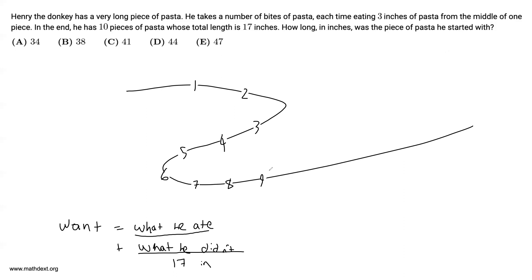And so what does that mean? How much pasta did he eat? Well, every time he took a bite of pasta, he took three inches off. And since he took nine bites of pasta, what he ate, the amount of pasta he ate was number of bites he took times how many inches he bit off each time, nine times three, which is 27 inches.